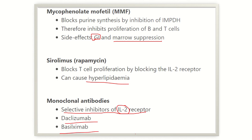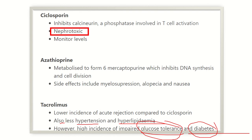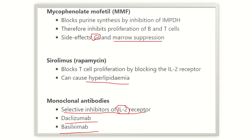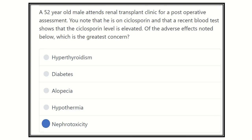Monoclonal antibodies such as basiliximab and daclizumab selectively inhibit the interleukin-2 receptor. In summary: monoclonal antibodies act on the IL-2 receptor; sirolimus causes hyperlipidemia; MMF causes GIT and bone marrow suppression; tacrolimus causes glucose intolerance and diabetes; azathioprine causes myelosuppression, alopecia, and nausea; and cyclosporine is nephrotoxic. Therefore, the correct answer is nephrotoxicity, as the other options — hypothyroidism, diabetes, alopecia, hypothermia — are caused by other agents, not cyclosporine.